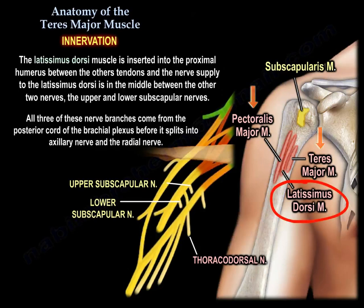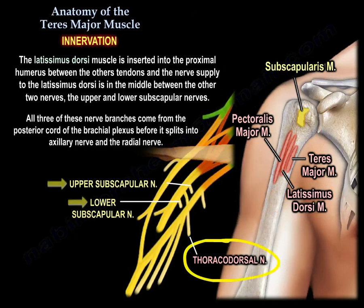The latissimus dorsi muscle is inserted into the proximal humerus in the middle between the other tendons, and the nerve supply to the latissimus dorsi is the thoracodorsal nerve, positioned in the middle between the other two nerves.